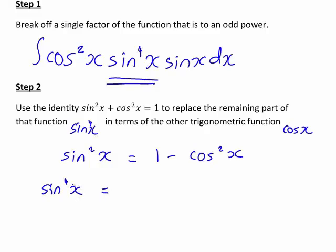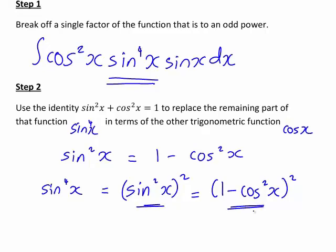Well, because it's also an even power of sine x, in particular it's sine to the power of 4x, we can write that as sine squared x squared, which means that it will become 1 minus cos squared x squared when we replace this part in terms of cos x.